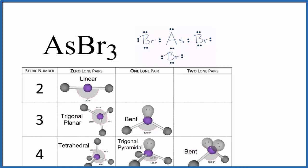We're going to count the number of things bonded to this central arsenic atom. We have one, two, three bromine atoms, and then we have this lone pair of electrons here. So we have four things. That means our steric number is four, and we have one lone pair here.